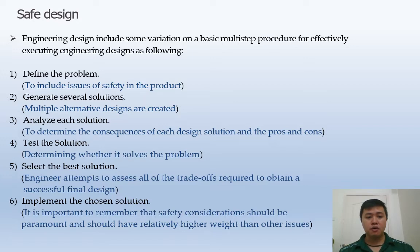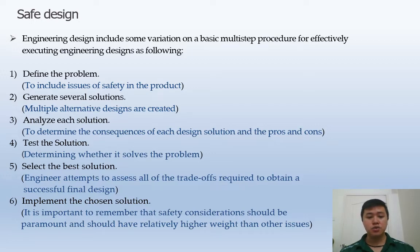Step three is to analyze each solution — this is to determine the consequences of each design solution, including the pros and cons. Step four is to test the solutions to determine whether they solve the problem. Step five is to select the best solution, where the engineer assesses all factors required to obtain a successful final design. Step six is to implement the chosen solution, where safety considerations should be paramount and given relatively higher weight than other issues.